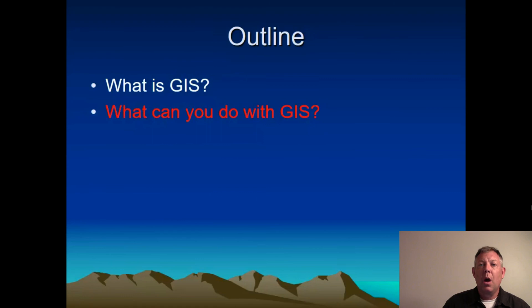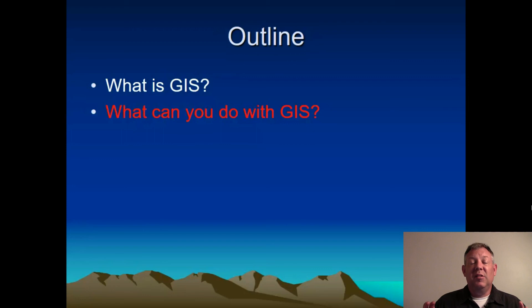Okay, so that's the first part — trying to give you an idea of what GIS is. In the next part, I'm going to talk briefly about some of the kinds of things we can do with GIS, and I'm going to concentrate specifically on some of the ways we use this in biology. So stay tuned for part two.